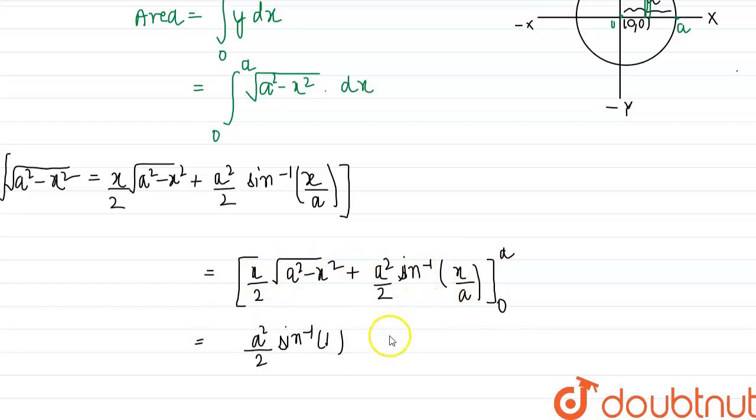And this will be sin⁻¹(0) is 0. So we will have (a²/2)sin⁻¹(1), that is (a²/2) times π/2. So this will be πa²/4.